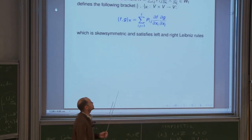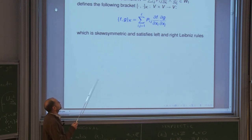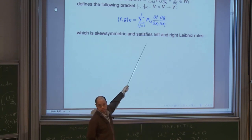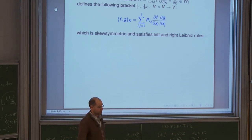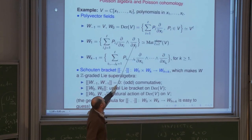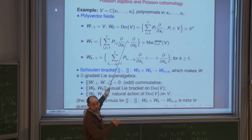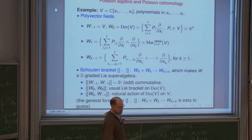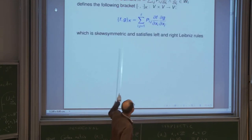The first observation is that bivector fields can be interpreted as skew-symmetric brackets on V by a natural formula. If you have an element from W^1 given by a certain expression, you can interpret it as a skew-commutative bracket on V associating to f, g the sum p_{ij} (df/dx_i)(dg/dx_j). This is a skew-symmetric bracket satisfying the left and right Leibniz rules.